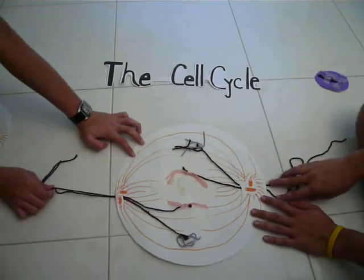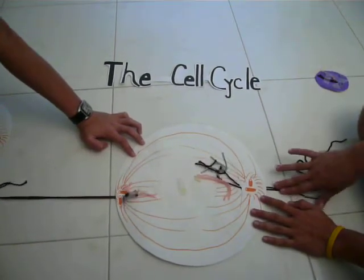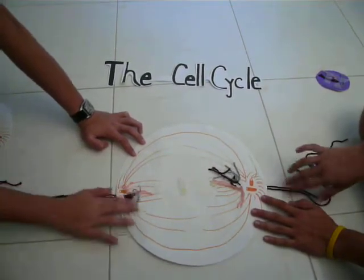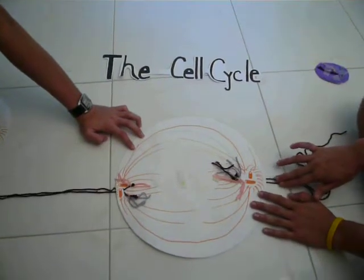The third phase, anaphase, is when the chromosomes separate to the sides through the spindle.